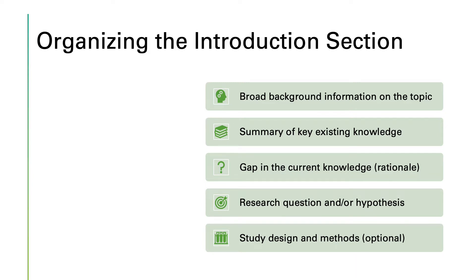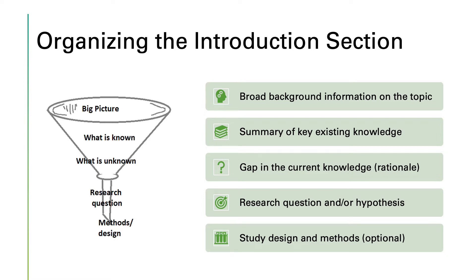To better organize these main components of the introduction section, it may be useful to build an outline or skeleton. One approach is adopting a funnel shape or inverted pyramid shape. Based on the funnel shape, the introduction has five key elements going from broad to narrow: big picture, what is known, what is unknown, research question, and methods and design.